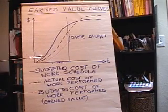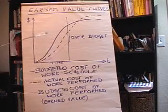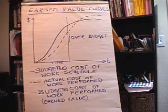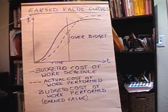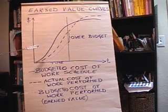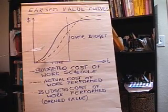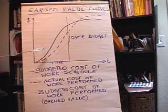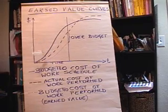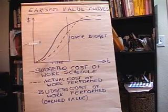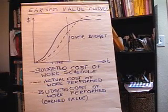Most project managers, especially ones working for the Department of Defense who manage many projects, can look at these three curves and without even thinking very much about it, determine whether they're over budget or under budget, or ahead or behind. So if you're tracking a project in Microsoft Project, these earned value curves will pop up, assuming that you're keeping your project updated on progress, how much you've actually spent, and how much you've budgeted in the project itself.